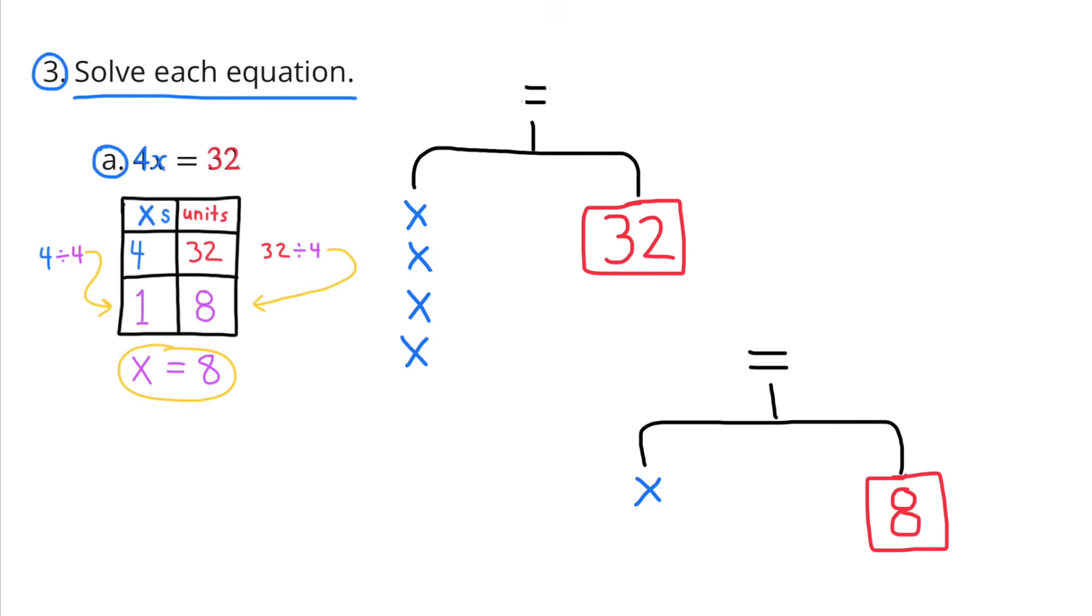The first diagram is a table on the left side of the screen. The column on the left has the number of x's in it, and the column on the right has the number of units. So 4x's equals 32 units. To figure out what 1x is worth, I needed to divide 4 by 4. That gives me 1x. Since I divided the number of x's by 4, I need to divide the number of units by 4. So 32 divided by 4 equals 8. So 1x equals 8.